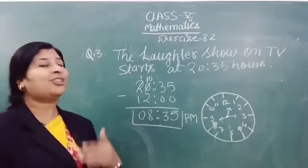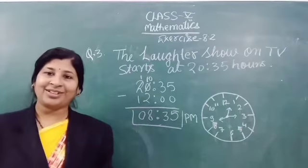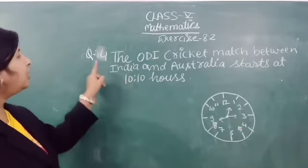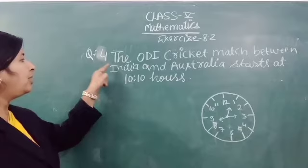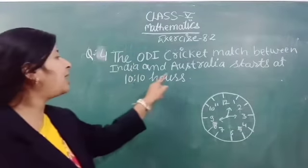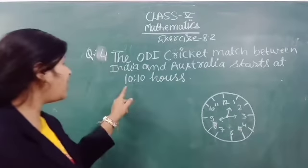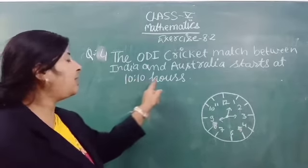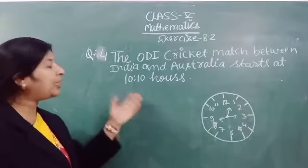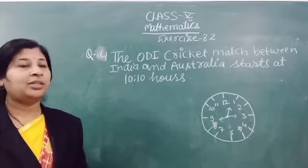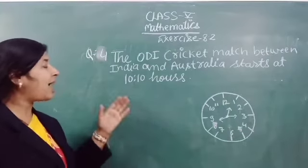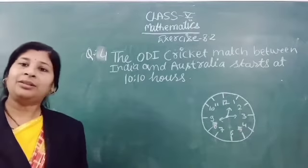Now we solve the next question. So, student, here question number 4: The ODI cricket match between India and Australia starts at 10:10 hours. So, this is in 24-hour clock. We convert this time to 12-hour clock. It is similar to question number 3.